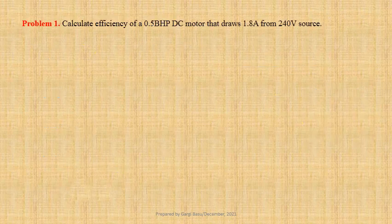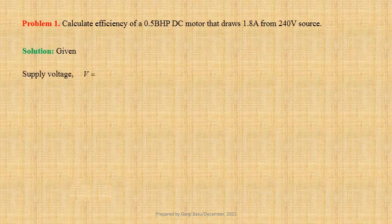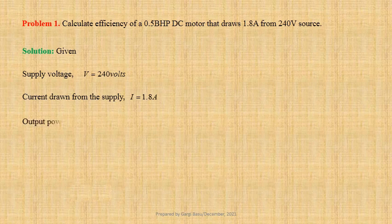We have to calculate efficiency of a 0.5 BHP DC motor that draws 1.8 ampere from a 240 volt source. Let us first write down the given data. Supply voltage V equals 240 volts. Current drawn from the supply I equals 1.8 ampere. Output power of the motor P_o equals 0.5 BHP.